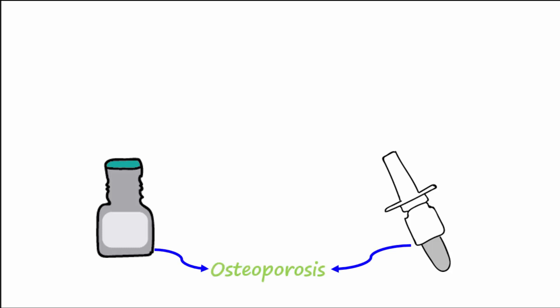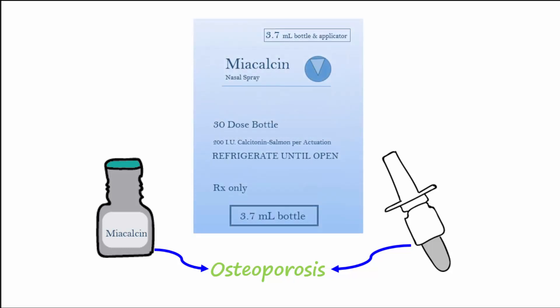Drug formulations of calcitonin have been developed that are used to treat osteoporosis. Miacalcin may be administered by nasal spray or injection.